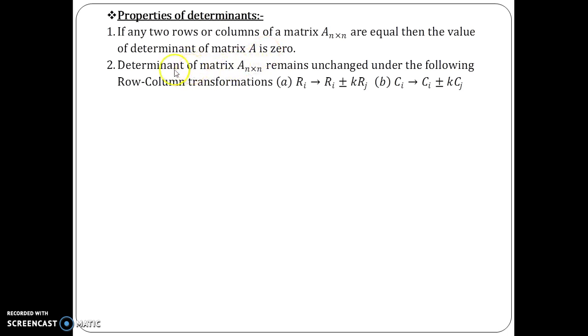Other thing we know: determinant of a matrix A remains unchanged or unaltered under these two row-column transformations—that is, Ri changing to Ri ± kRj or Ci changing to Ci ± kCj where k is a non-zero scalar. These are the only two row-column transformations under which the determinant is not going to change its value.